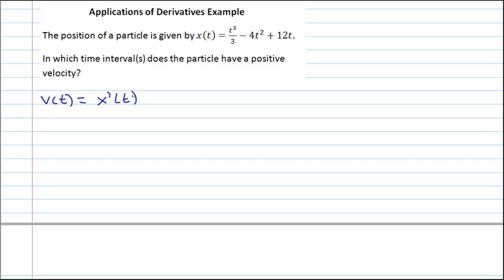So what we get at here, if we want v of t to be greater than 0, which it must be for it to be positive, this implies that we need x prime of t to be greater than 0. So we need to find the intervals where x prime of t is greater than 0.